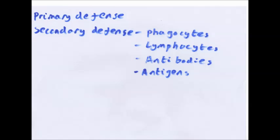In conclusion, the immune system. Primary defence: skin, mucous membranes, tears, earwax, and acidic conditions. Secondary defences: phagocytes, lymphocytes, and antibodies, which all respond to antigens. That's all you need to know. Thanks for listening.